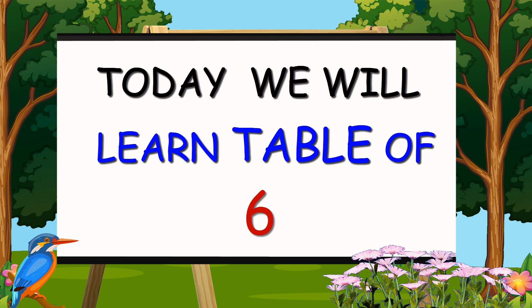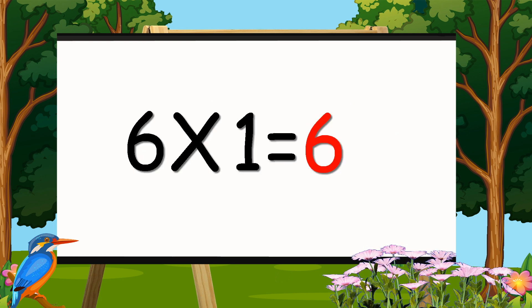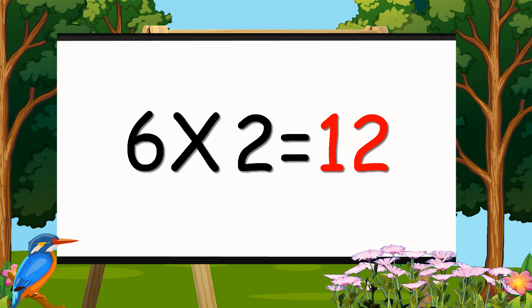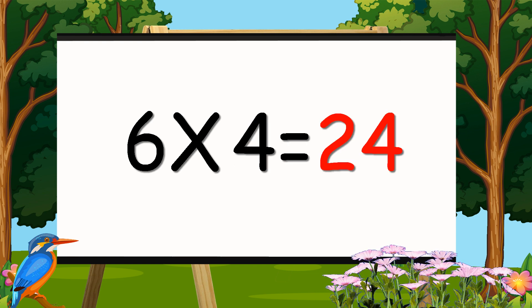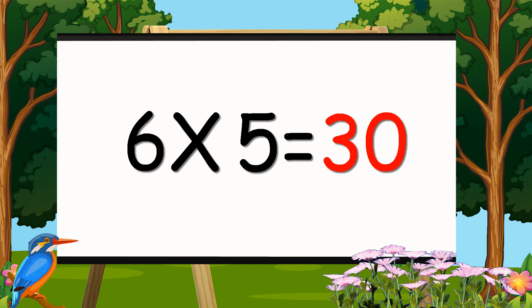Today we will learn the table of six. Six ones are six. Six twos are twelve. Six threes are 18. Six fours are 24. Six fives are 30.